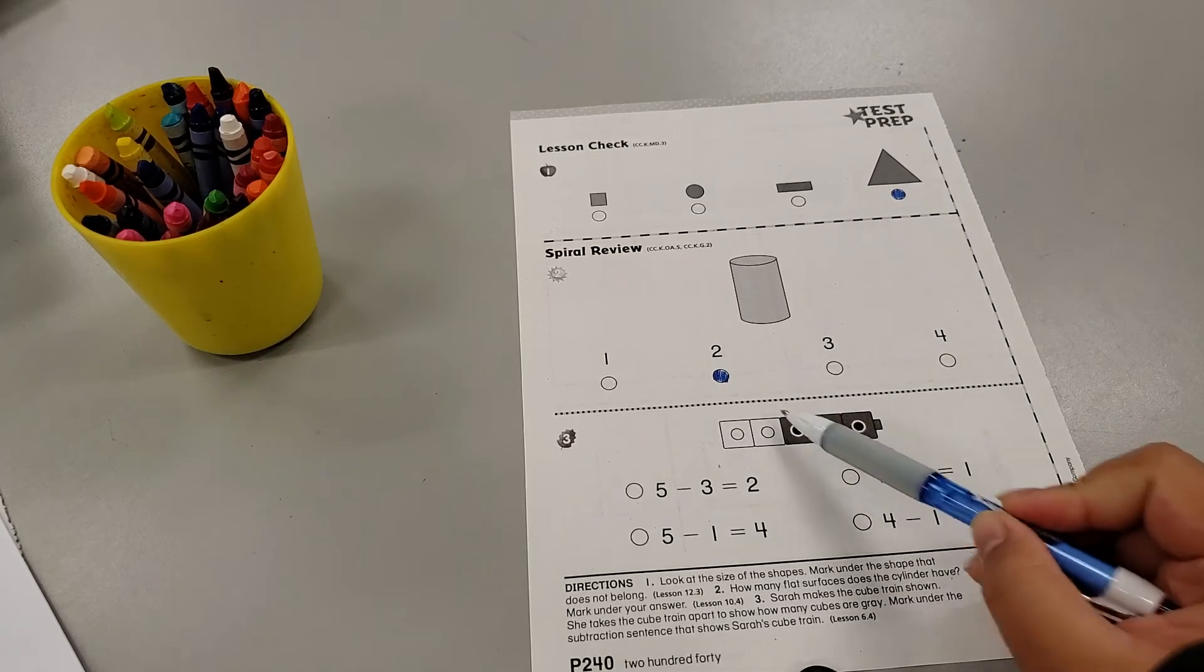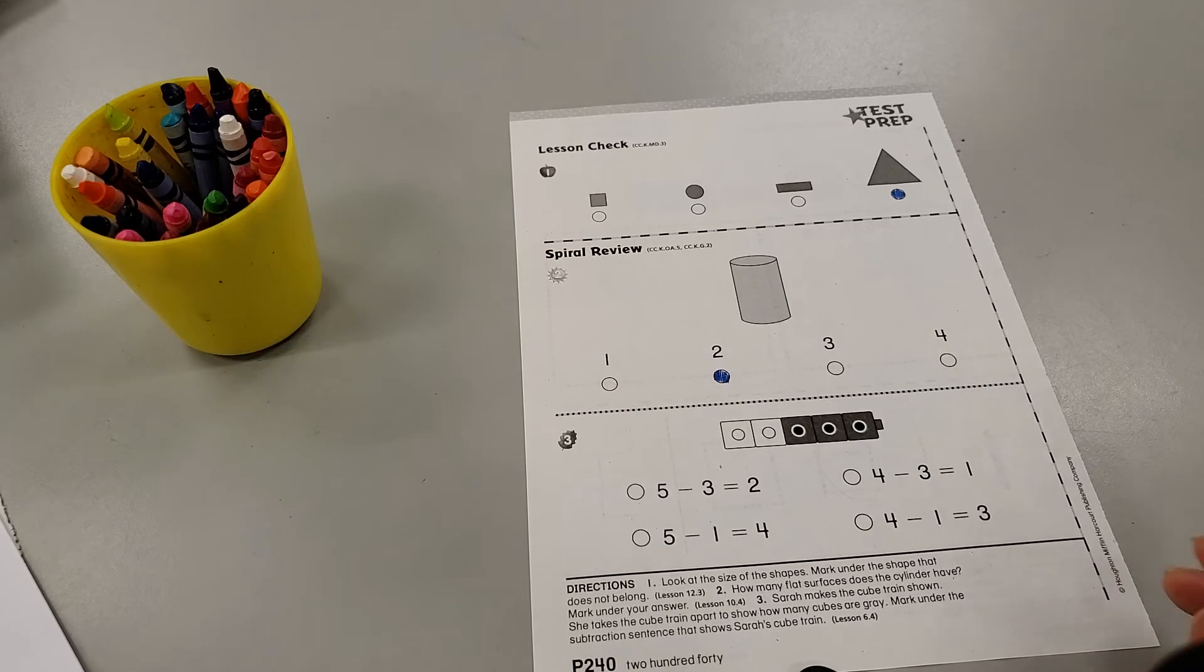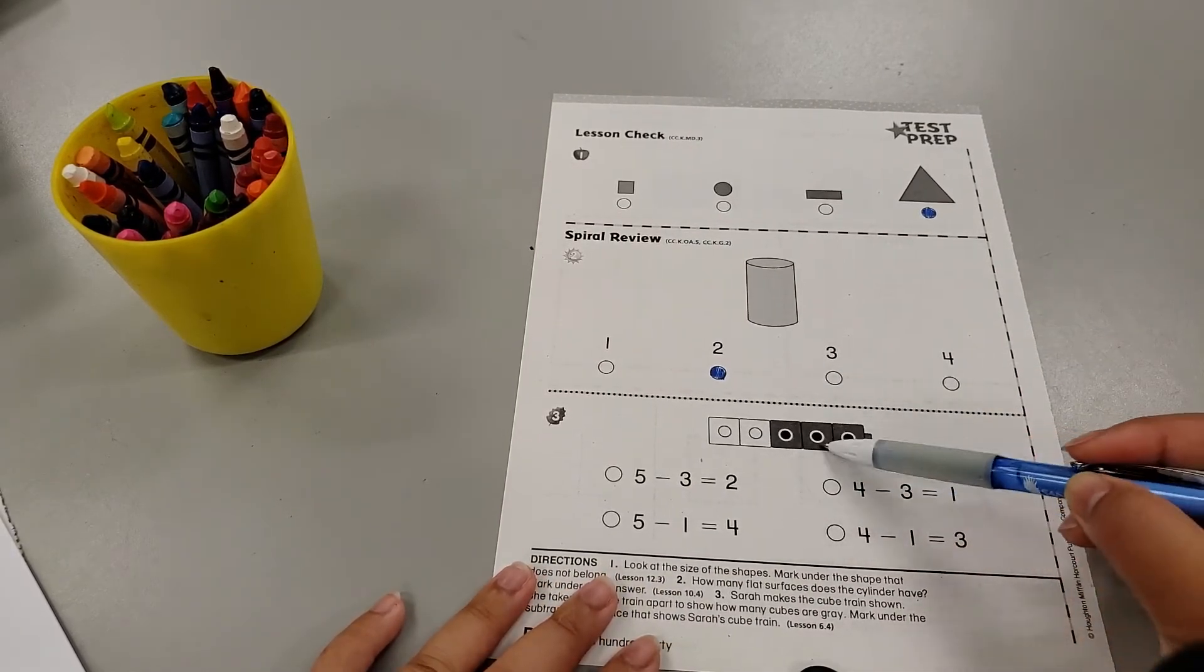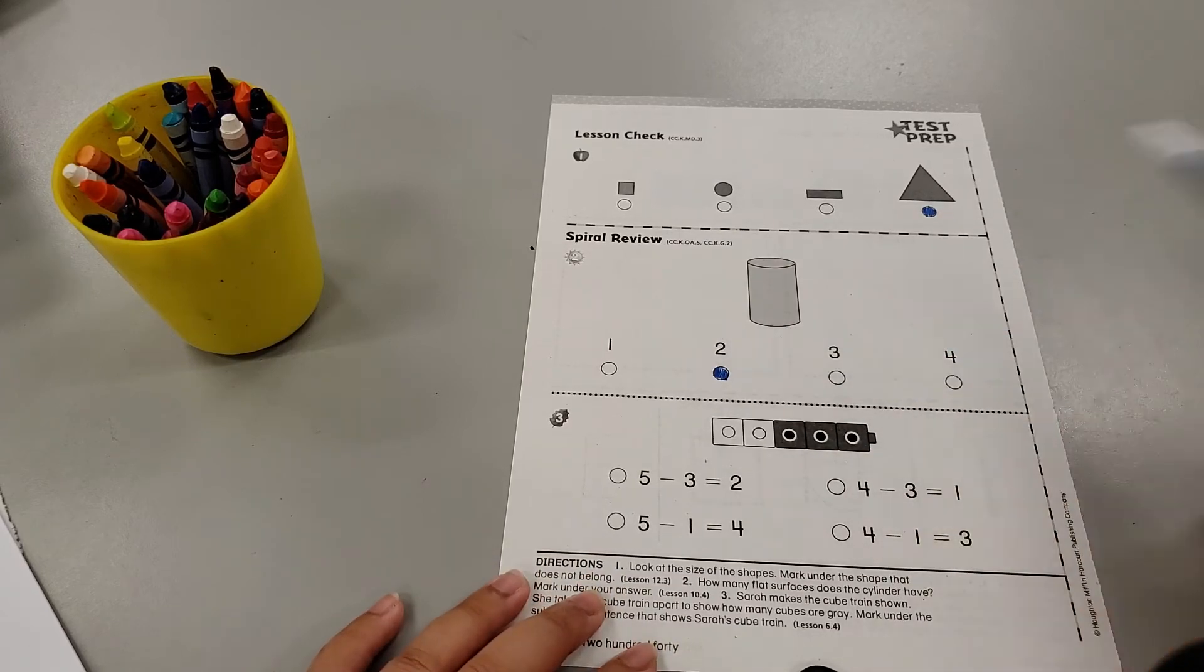It does not have the circle and the X's, so it's not taking away any cubes, but it is taking it apart. So how many cubes are in this train all together?